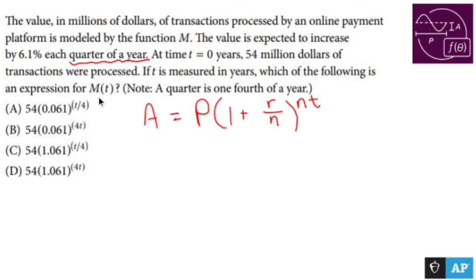What do we know? We want to call it M(T). So that's our thing. The principal is 54 million, but it looks like they don't want us to write it out in millions of dollars. In fact, it says that somewhere here. So we're just going to call P equals 54, one plus...